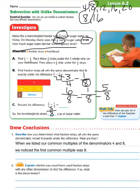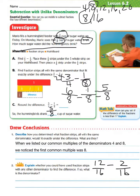Using denominator 16: 16 divided by 4 equals 4, and 4 times 3 equals 12. And 16 divided by 8 equals 2, and 2 times 1 equals 2. So we could have subtracted and ended up with 10 sixteenths, and then simplified that down to 5 eighths.